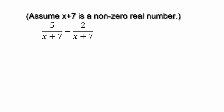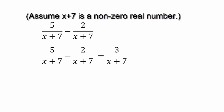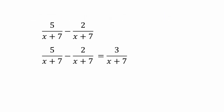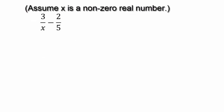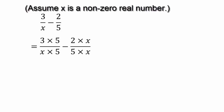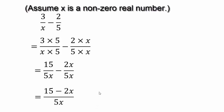Let's see if you can do rational expressions the same way. We have 5 copies of 1 over (x plus 7) minus 2 copies of 1 over (x plus 7) — hopefully you got 3 over (x plus 7). For the next one, we have x and 5 as denominators, so we need to make 5x as our common denominator. Multiply by 5 for the first term and by x for the second, giving us 15 minus 2x over 5x. Subtracting rational expressions requires us to multiply polynomials.